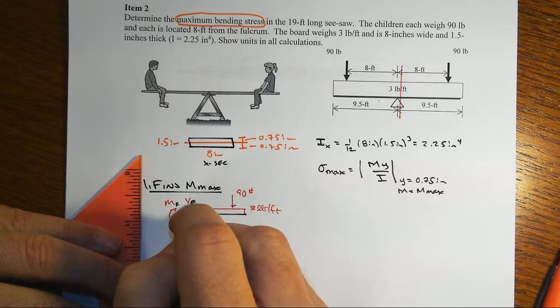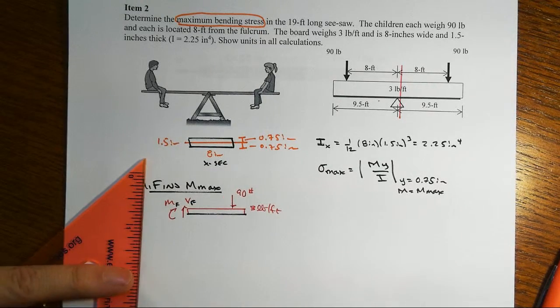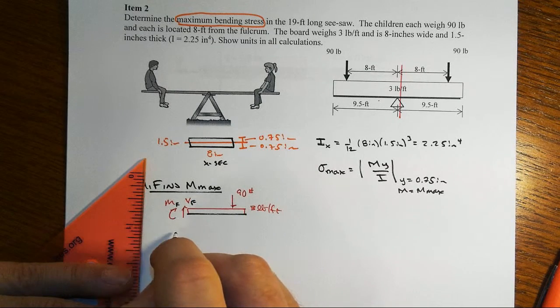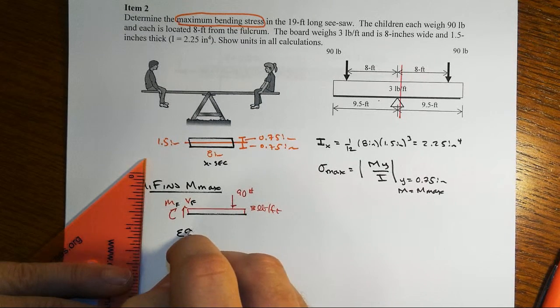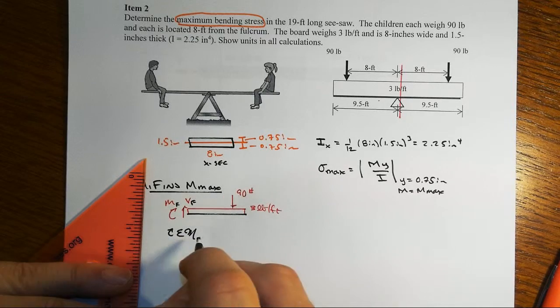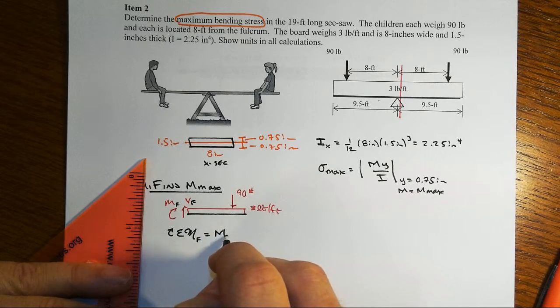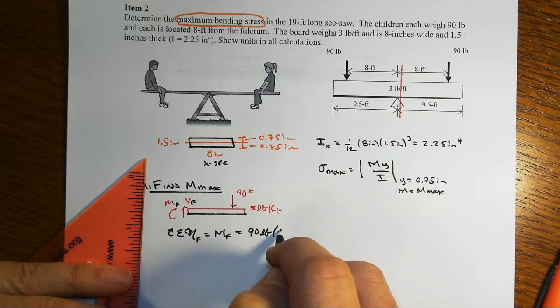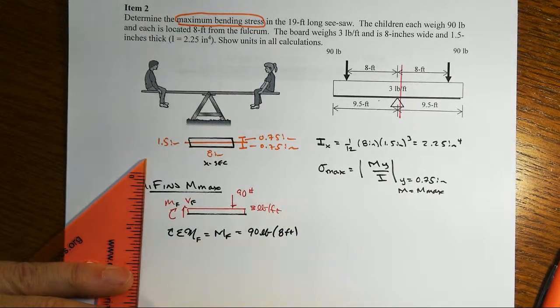so let's call this point F. And of course to find our maximum moment here, we just sum moments about point F.